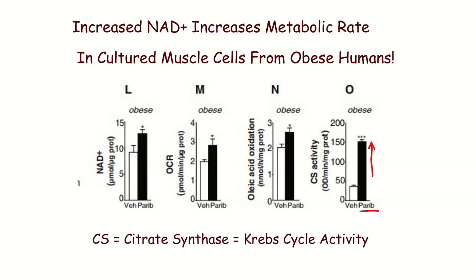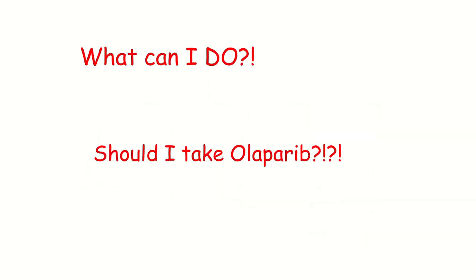Citrate synthase activity — the limiting enzyme that begins the Krebs cycle and a controlling factor in your metabolic rate — goes up by like fourfold when you block PARP. That is a massive increase in citrate synthase.